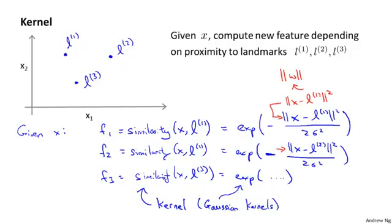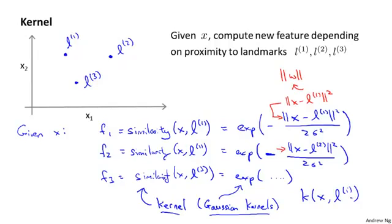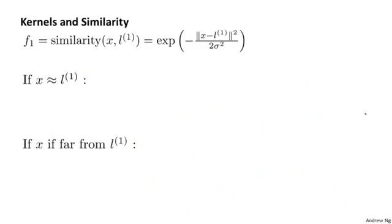In general, these different similarity functions are called kernels, and we can have different similarity functions. The specific example here is called a Gaussian kernel, and we'll see other examples later. Instead of writing similarity between x and L, sometimes we also write this as a kernel denoted lowercase k between x and one of my landmarks Li. Let's see what these kernels actually do and why these exponential expressions might make sense.